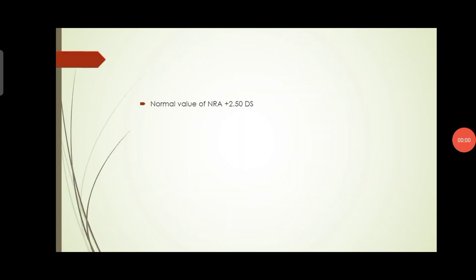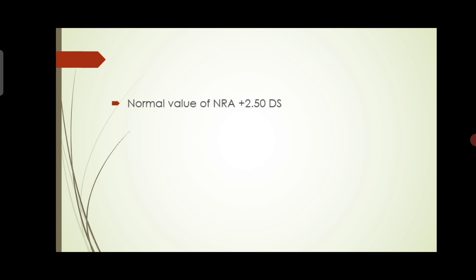By this method we find the NRA value. The normal value of NRA is +2.50 diopters, though it can be slightly more or less. The patient should be able to relax accommodation to at least +2.50 diopters. This value is linked with the PFV — Positive Fusional Vergence — value in the step vergence test.